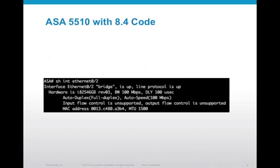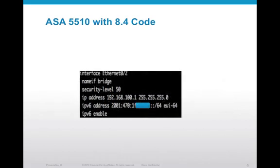Let's see a quick example. Here's my ASA 5510 running 8.4 code. I've got a show interface Ethernet 0/2 here, and we can see that my MAC address, on the last line of the output, is 0013C480A3B4. The next screen is my actual configuration on that interface. This is a dual-stack configuration, so I have an IPv4 address and also an IPv6 address. What's interesting is that all I did for my IPv6 address is put in the network portion, which I've blocked out for security, followed by the keyword EUI-64.